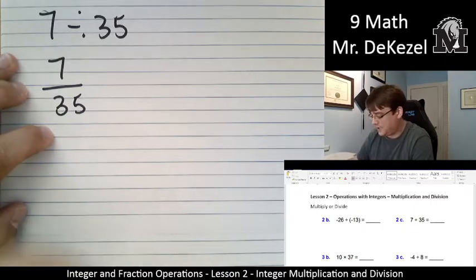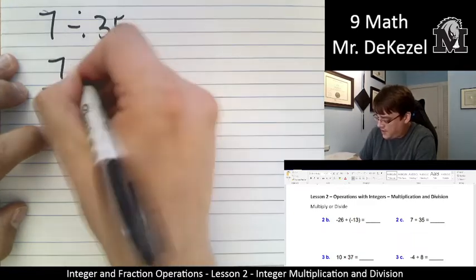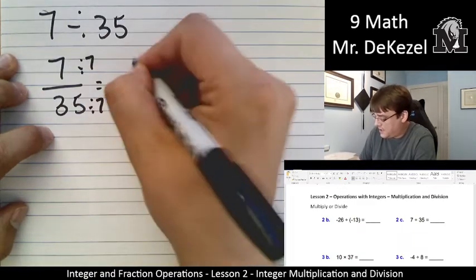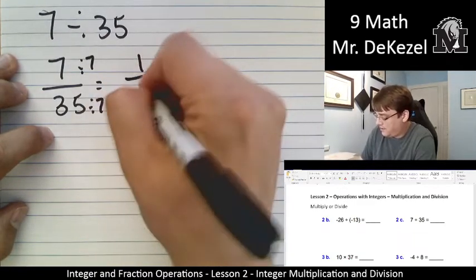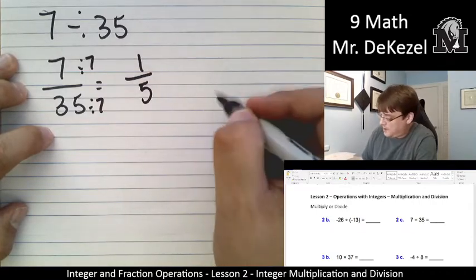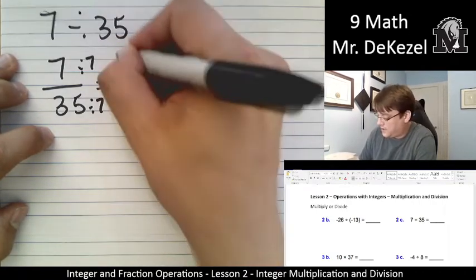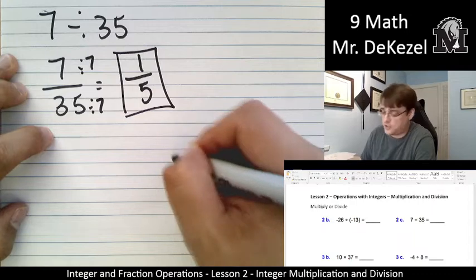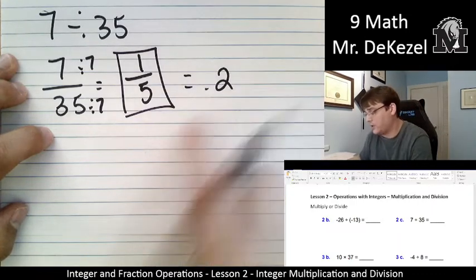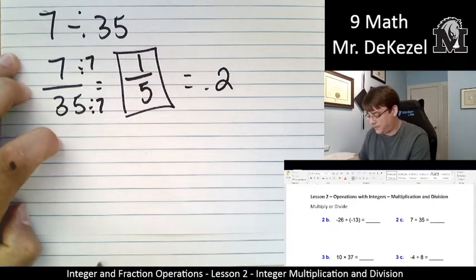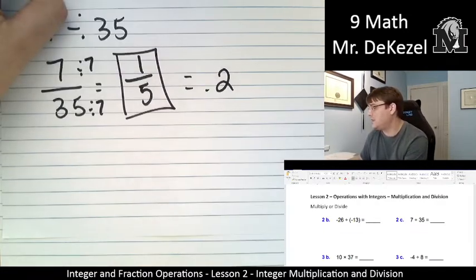Sometimes you just make a mistake and you catch yourself. But that means that if I divide both of these by 7, I would end up with 1 fifth. And you can probably remember, this is totally fine to keep your answer this way, a reduced fraction form, but 0.2 is the decimal that represents that fraction. Let's continue.